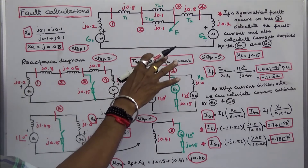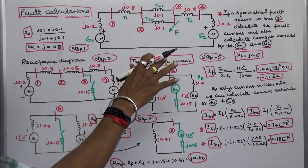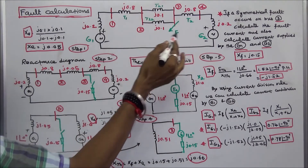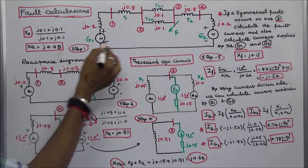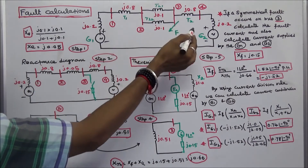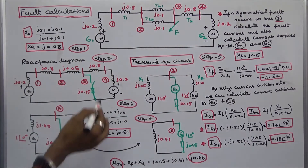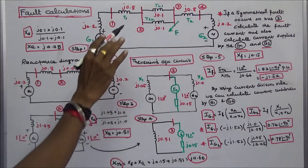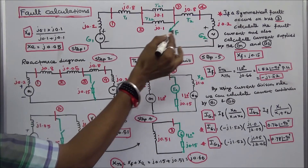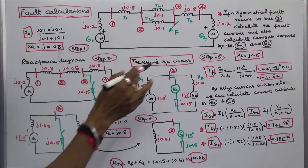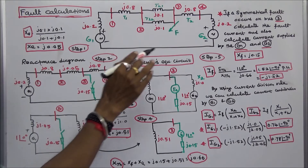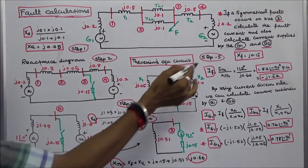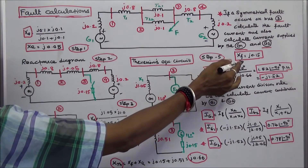In this class we work out one problem on Symmetrical Fault Calculation using Thevenin's Theorem. This is the given network, which consists of two generators, two transformers, and two transmission lines. The reactance values are given, all in per unit. The question is: if a symmetrical fault occurs on bus 3, calculate the fault current and also calculate the current supplied by generators G1 and G2. The fault reactance XF is equal to J0.15.